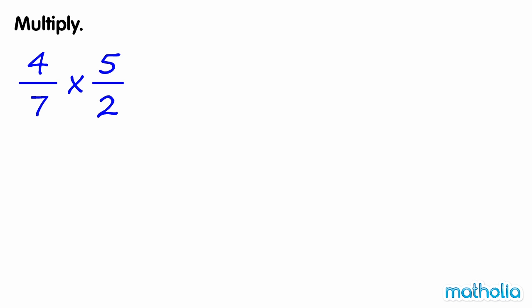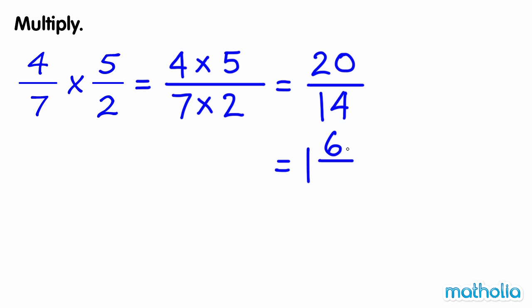Multiply. 4 sevenths times 5 halves is equal to 4 times 5 over 7 times 2, which equals 20 over 14. We can express this as the mixed number 1 and 6 fourteenths. 6 fourteenths can be further simplified to 3 sevenths. So 4 sevenths times 5 halves is equal to 1 and 3 sevenths.